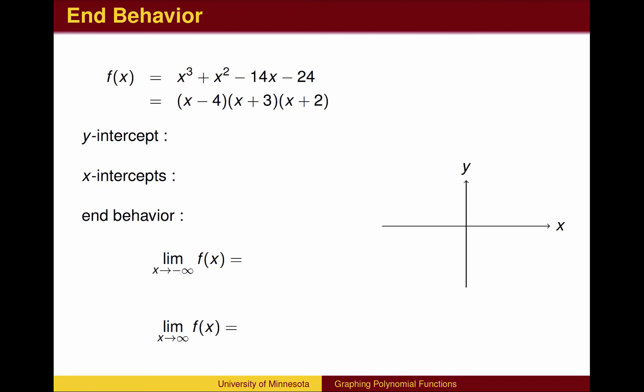One easy point to find is the y-intercept. Recall that the y-intercept occurs where x equals zero. So to find the y-intercept, plug zero in for x and calculate f(x). In this case, use the expanded form to find that the y-intercept is -24.